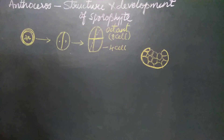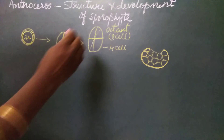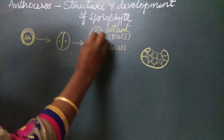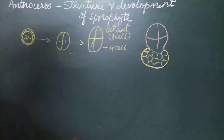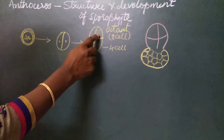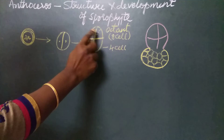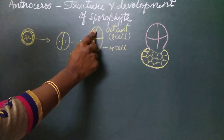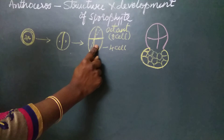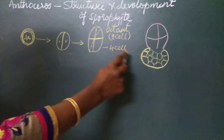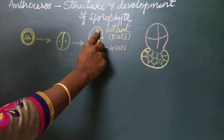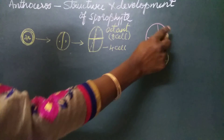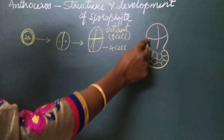The upper tier of four cells divides again by a transverse wall, resulting in the formation of eight cells — four cells in the upper tier and four in the lower tier. The four cells of the lower tier have divided to form the foot. The four cells in the upper tier will divide once again transversely to form eight cells.